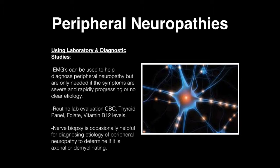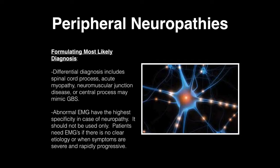Under laboratory and diagnostic studies, EMGs can help diagnose peripheral neuropathy, but are only needed if symptoms are severe and rapidly progressing with no clear etiology. Routine laboratory evaluations include CBC, thyroid panel, folate, and vitamin B12 levels. Nerve biopsy is occasionally helpful for diagnosing etiology and determining if the neuropathy is axonal or demyelinating. Differential diagnosis includes spinal cord process with acute myopathy, neuromuscular junction disease, or central neuro process, which may mimic Guillain-Barré syndrome. Abnormal EMGs have the highest specificity but should not be used alone.